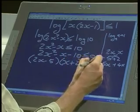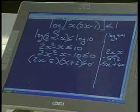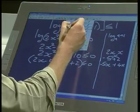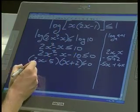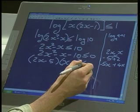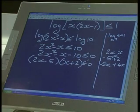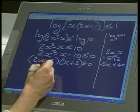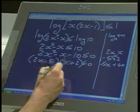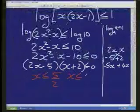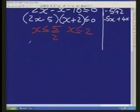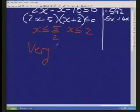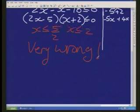Now, lots of students will go and make this mistake. And I'm going to write it in red, because this is something you mustn't do. They'll say, right, because it's an inequality, we deal with it in exactly the same way that we deal with equality or equal signs. And you get x is less than or equal to 5/2, and x is less than or equal to 2. Right? Very, very wrong.